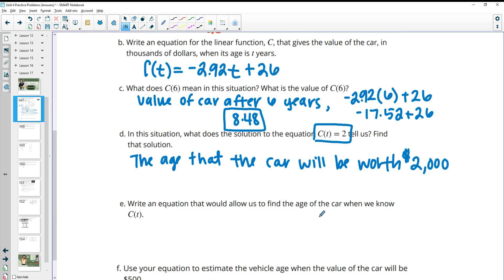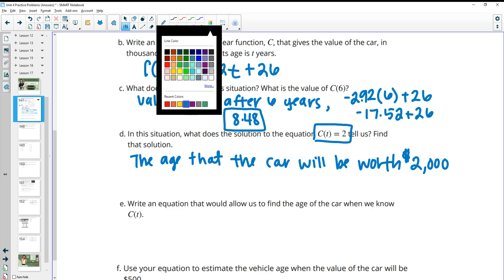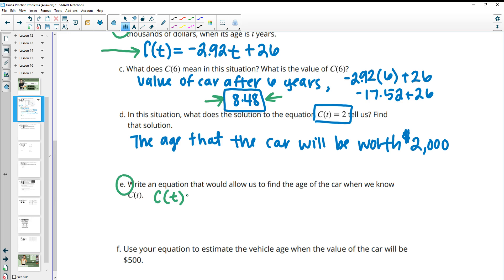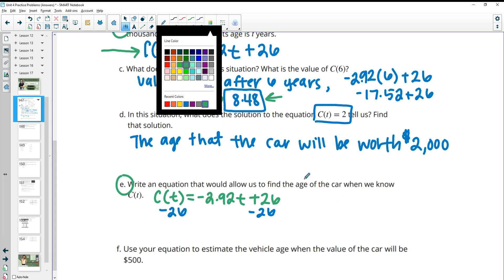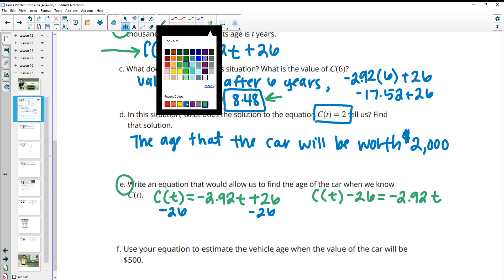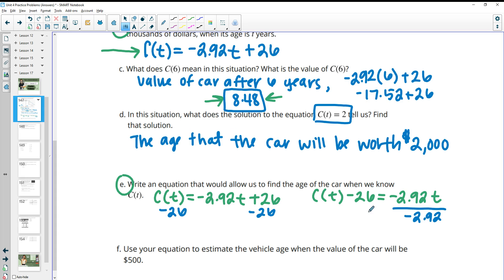Write an equation that would allow us to find the age of the car when we know C(t). So this is taking your equation. And again, this number here and this problem here and this problem here are all potentially different depending on what equation you wrote. So we're taking this equation and we're solving it for C(t) for here. So we want to solve it for C(t). So let me just write it down. Or sorry, we want to solve it for t, not C(t). So we want to get t by itself. So I'm going to subtract 26 from both sides.